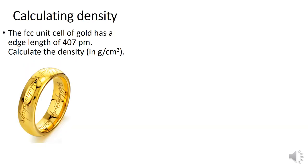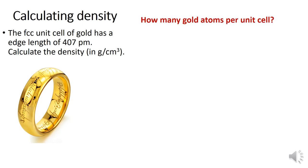Now let's calculate the density of gold in the ring. The face-centered cubic unit cell of gold has an edge length of 407 picometers — which we just calculated. This is a multi-step approach. First, find how many atoms are in the unit cell: for FCC, that's eight one-eighth corners plus six halves, making four gold atoms per unit cell. Next, calculate the mass of those four atoms using Avogadro's number and the molar mass of gold: that gives 1.308 × 10⁻²¹ grams.